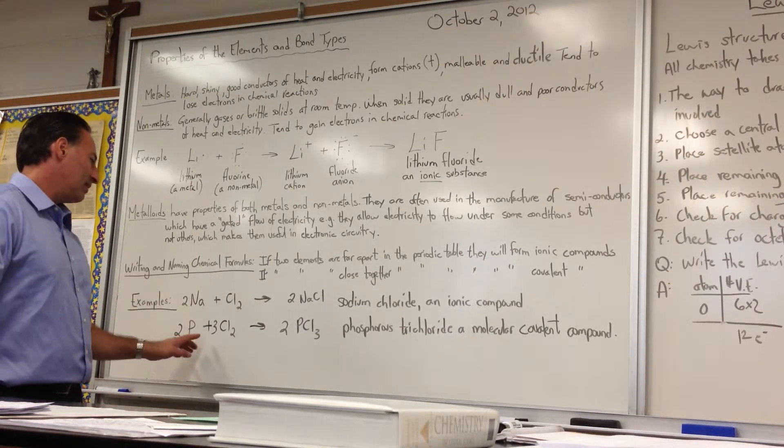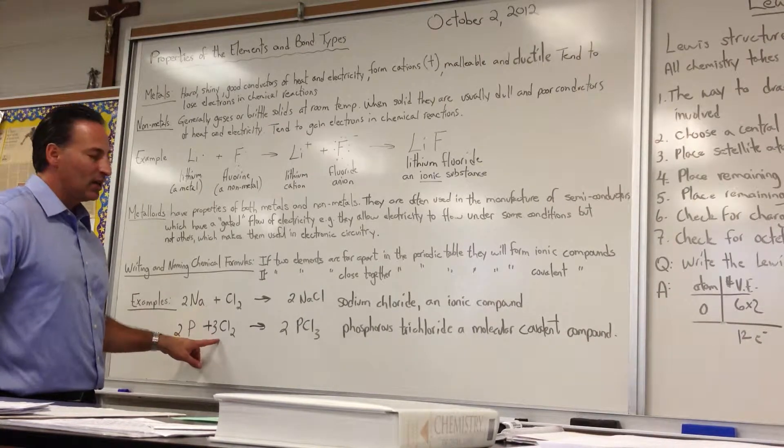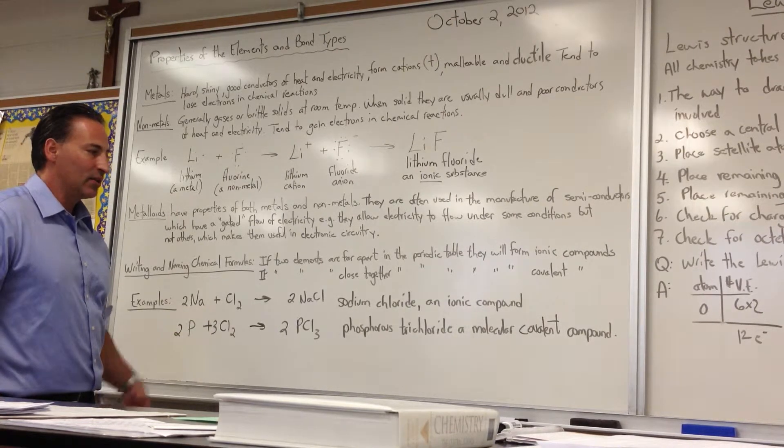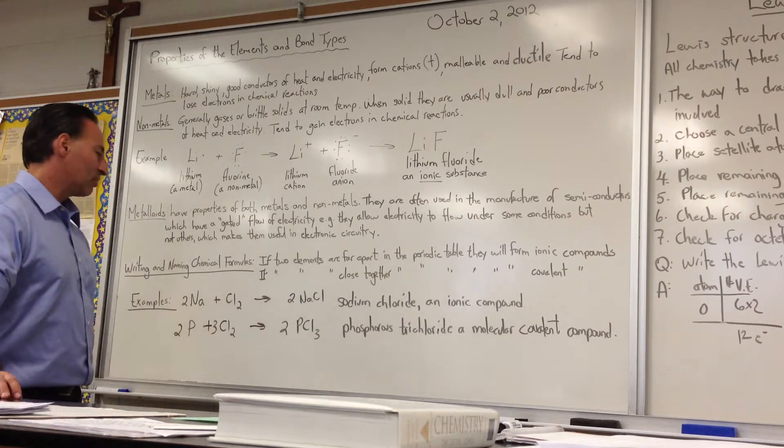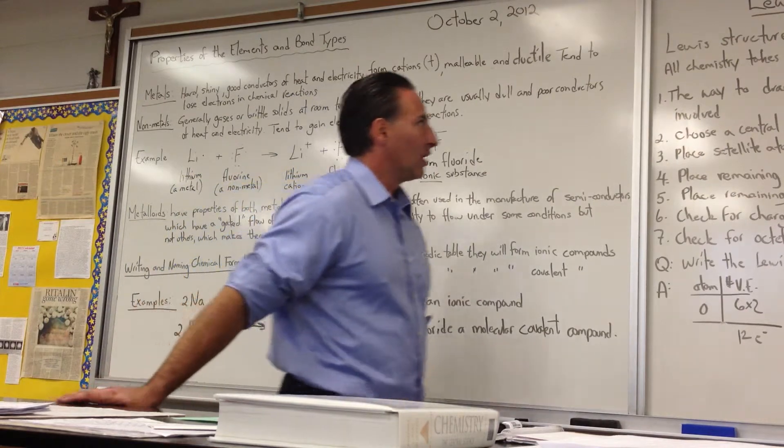If, on the other hand, you have a covalent substance, if the two things are pretty close on the periodic table, they have similar electronegativities, then they're going to form a covalent compound where the electrons are shared. So, here, for example, we have phosphorus combined with chlorine, we get phosphorus trichloride, and that's a molecular or covalent compound.